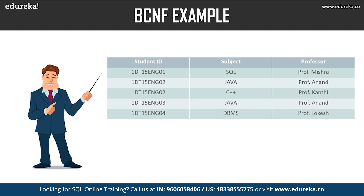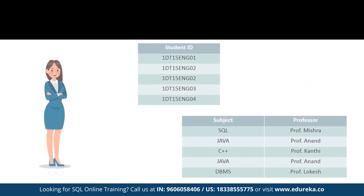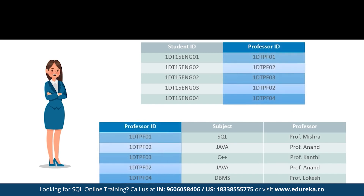To satisfy Boyce-Codd normal form, we divide the table into two parts. The first table holds student ID and a new column, professor ID. The second table has professor ID, professor, and subject columns. By introducing professor ID, we remove the non-prime attribute's functional dependency. In the second table, professor ID becomes the super key and the remaining columns are functionally dependent on it — thus satisfying Boyce-Codd normal form.